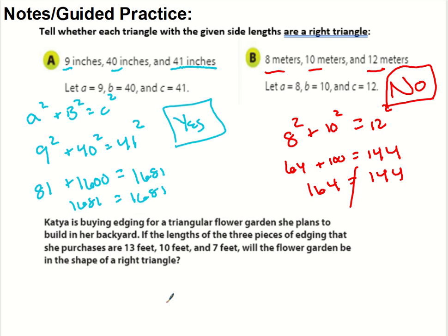Okay. So Katia right here is buying edging for a triangular flower garden she plans to build in her backyard. We have the length of the three side pieces, 13, 10, and 7. We want to figure out if it can make the shape of a right triangle. So if I know the side lengths are 13, 10, and 7, what I need to do is I need to plug those into Pythagorean theorem and determine if they will work. The biggest thing is 13 feet is the largest side. So 13 feet has to be by itself. And then the two legs are the two smaller sides. So I can multiply and simplify to determine if it's going to work out. So 10 squared, 49 is 149. And 13 squared is 169. It does not work. So therefore, no, the flower garden will not be in the shape of a right triangle because the Pythagorean theorem does not work.